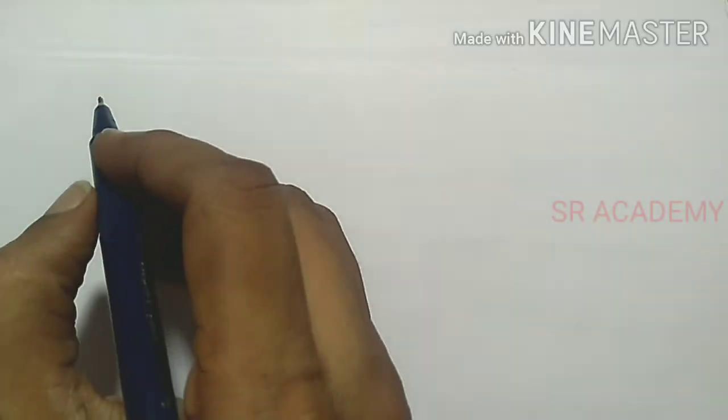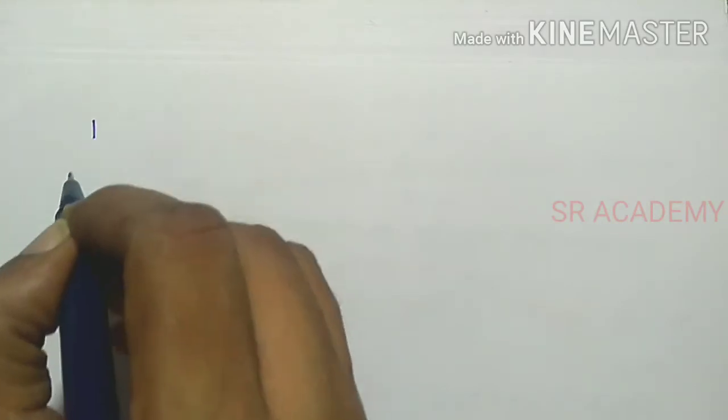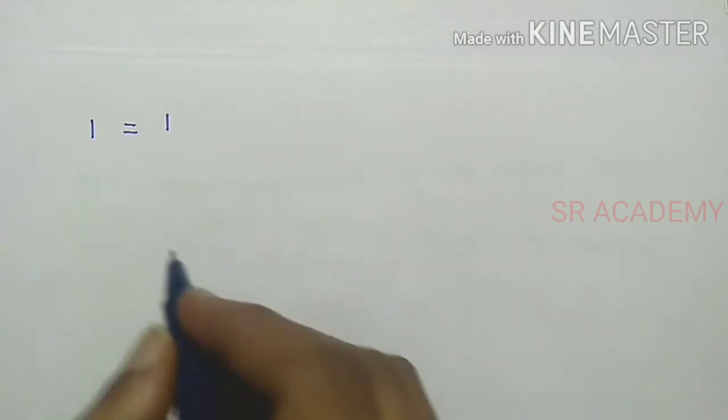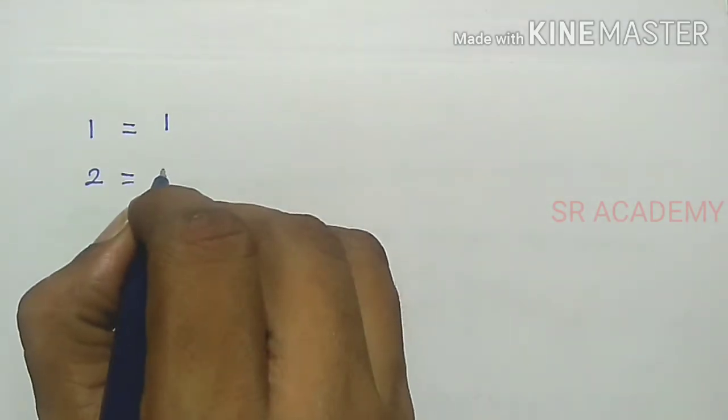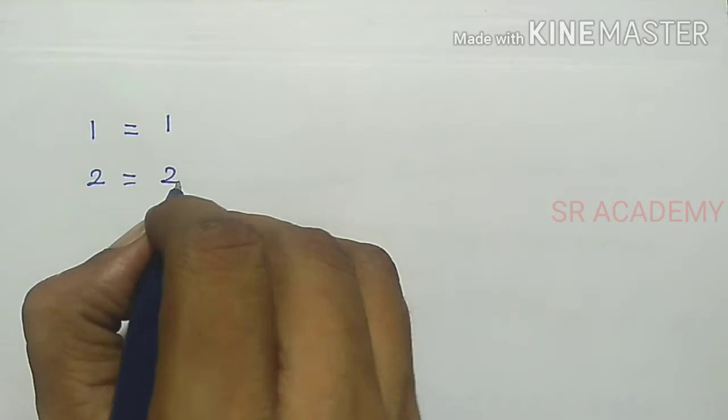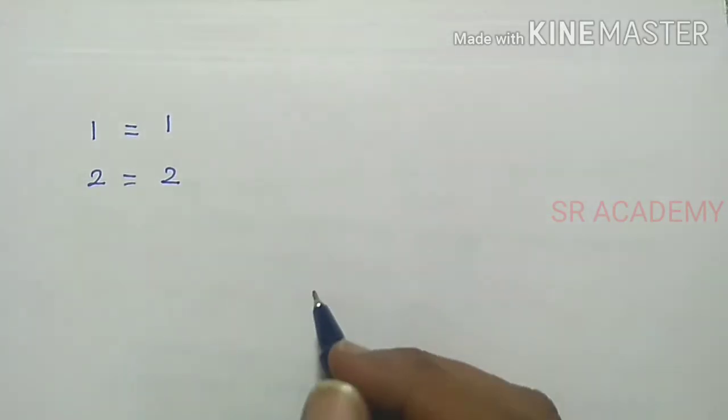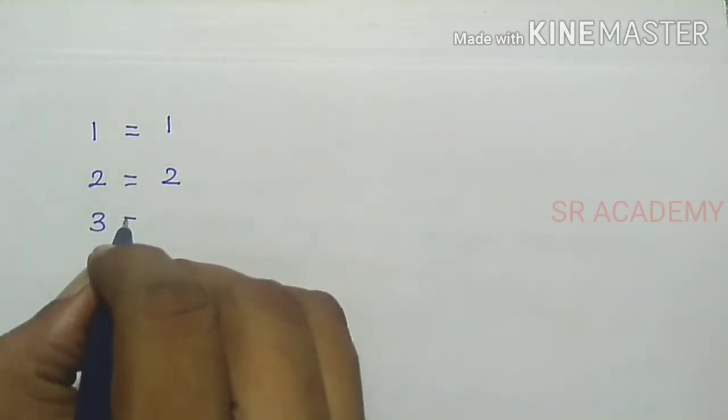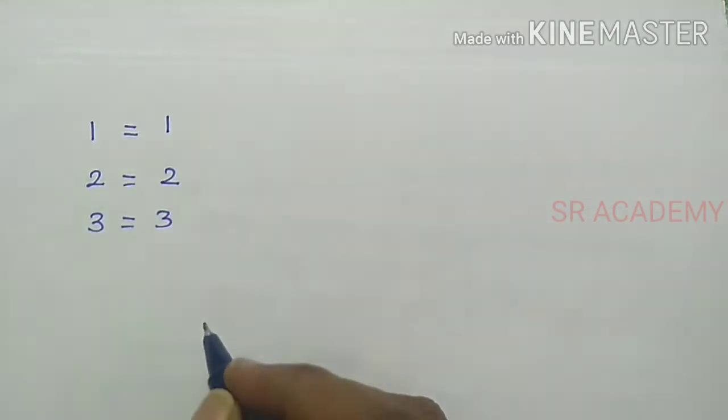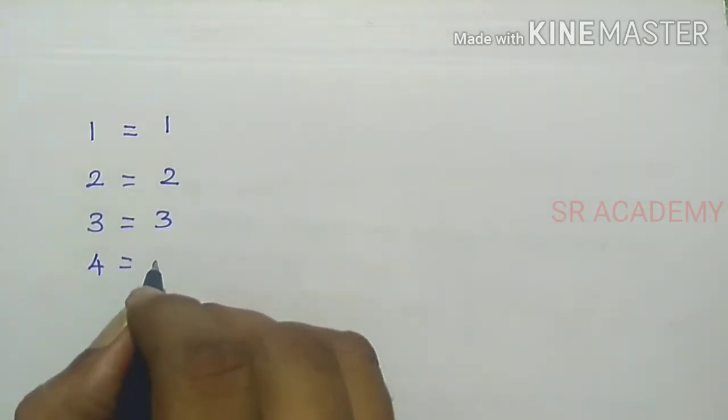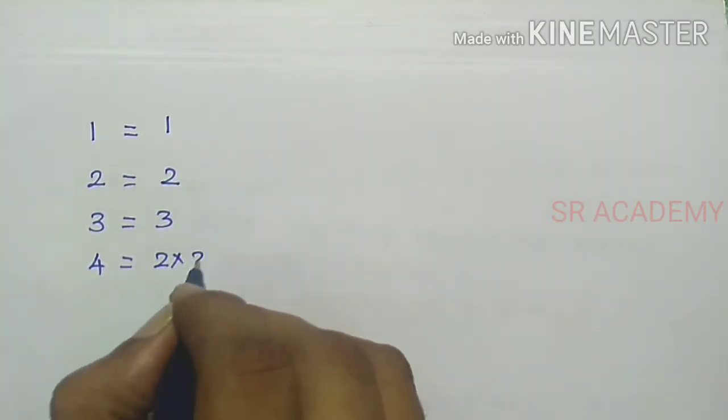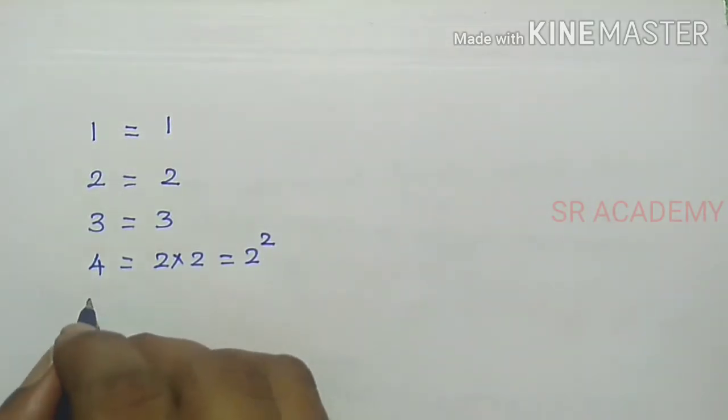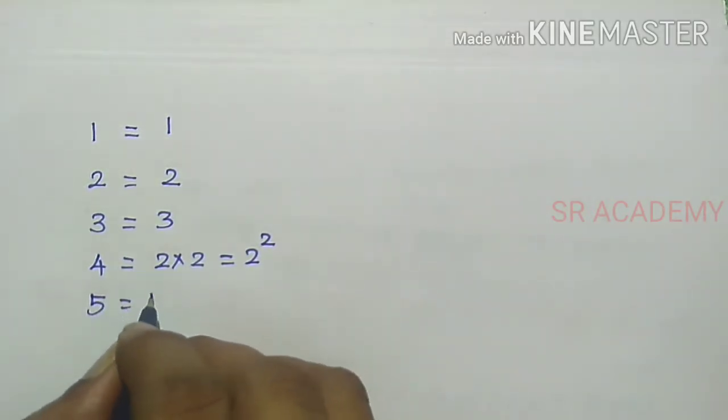So 1 equals 1. 2 equals 2, prime factorization. 3 is a prime number. 4 equals 2 times 2, that is equal to 2 to the power 2. 5 equals 5.